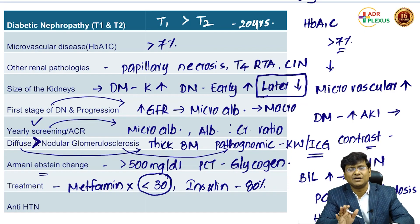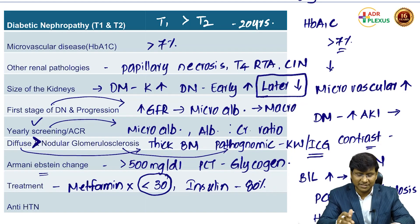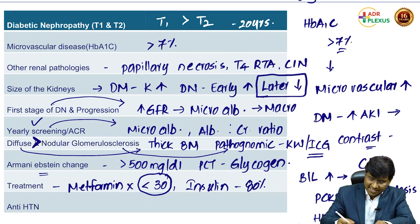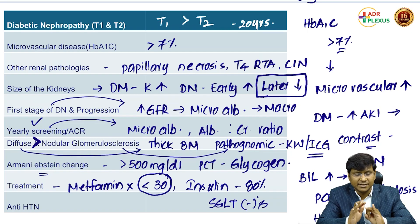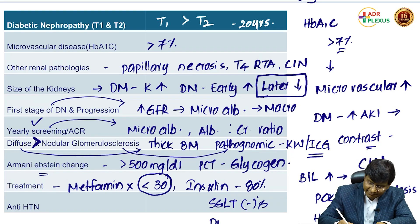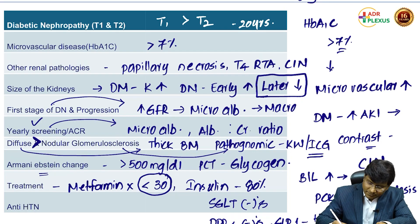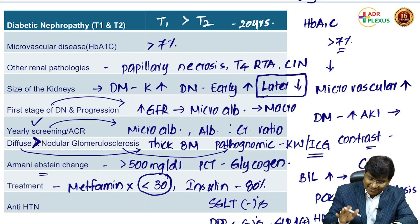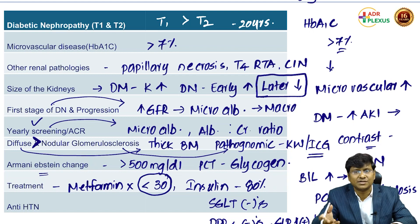Strict glycemic control must be maintained. New molecules to prevent progression of diabetic nephropathy include SGLT2 inhibitors — examples: canagliflozin, empagliflozin — and DPP-4 inhibitors (gliptins) such as sitagliptin, vildagliptin, and saxagliptin. GLP-1 analogues such as liraglutide and exenatide given subcutaneously also prevent progression of diabetic nephropathy.